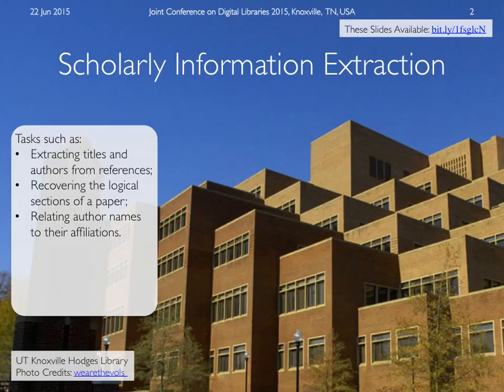I thought it'd be nice to have a picture of UT, so here it is. This is the Hodges Library, just a couple blocks from us, and of course it stores lots of library books and digital library collections. It's appropriate because it looks like a mine. We're going to mine things like titles and authors, or references relating author names to their affiliations. Those are the types of information extraction things that we'd like to be able to do.